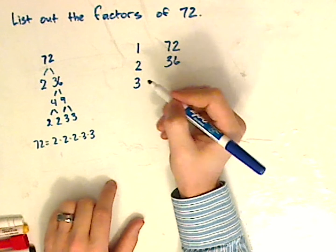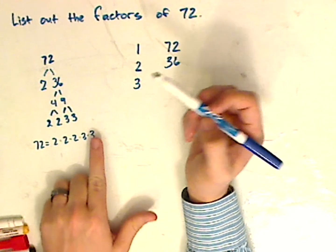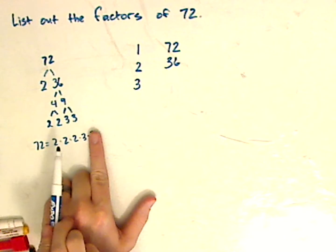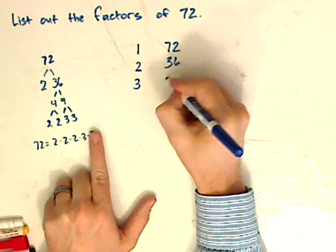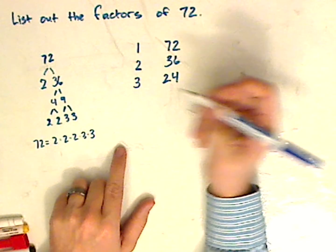You can use the 3. 3 times what will give me 72? If you don't know, just use this. 2 times 2 times 2 is 8, times 3 is 24. See that?